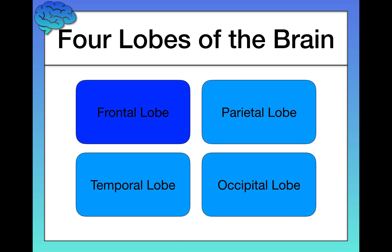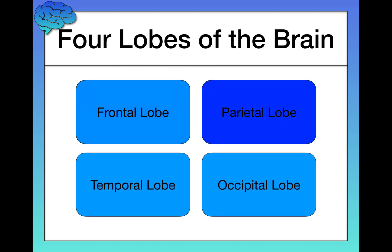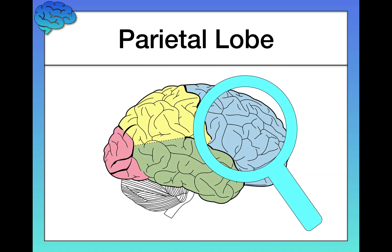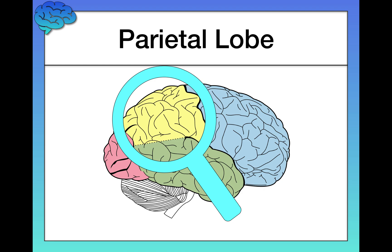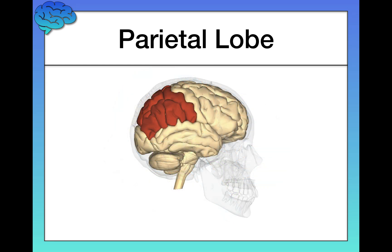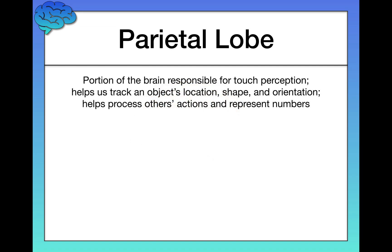Now let's talk about the parietal lobe. It sits right behind the frontal lobe, and here's another image in the context of the skull. The parietal lobe has very different functions from the frontal lobe. It's important for touch perception and some visual perception, though it's not the main vision center of the brain. It also helps us track an object's location, shape, and orientation.